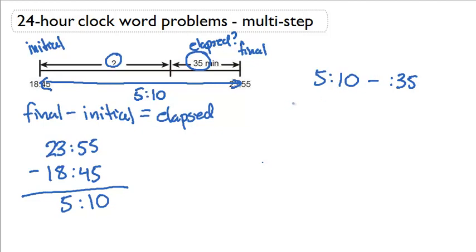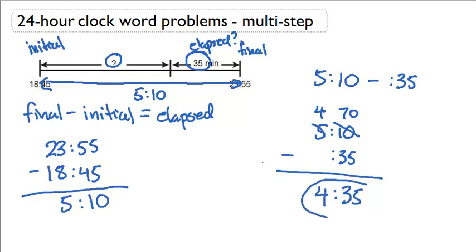So I'm just going to rewrite this down here in a form that we know how to solve with. I'm going to borrow 60 minutes because 10 needs to turn into 70 in order for this to work out very well to get non-negative numbers. And I get this final result.